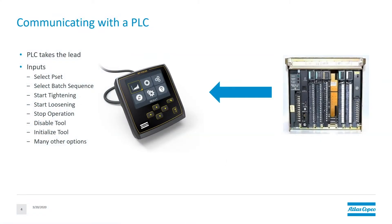Let's take an example of the MTF-6000 communicating with a PLC. In this situation, the PLC would take the lead. It could provide inputs to the MTF-6000. These inputs could tell the MTF-6000 to select a P-set, select a batch sequence, start the tightening, start loosening, stop what it's doing, disable the tool, initialize the tool, and there are many other options.